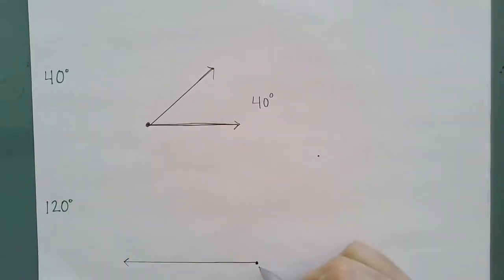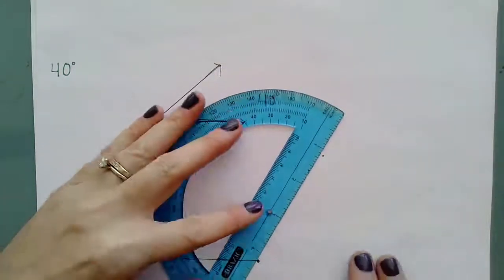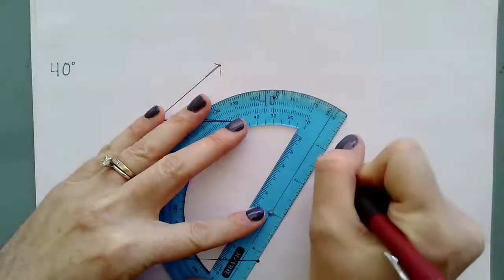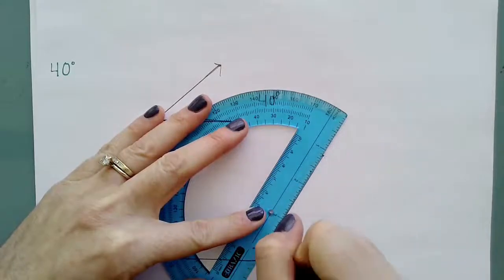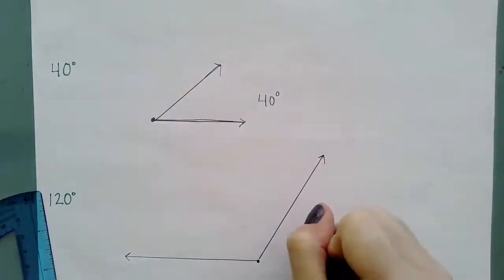So as I pull my protractor away, I'm going to connect my soon to be vertex here with my dot that I have created. Put my arrows on here. And then I know that this measures at 120 degrees.